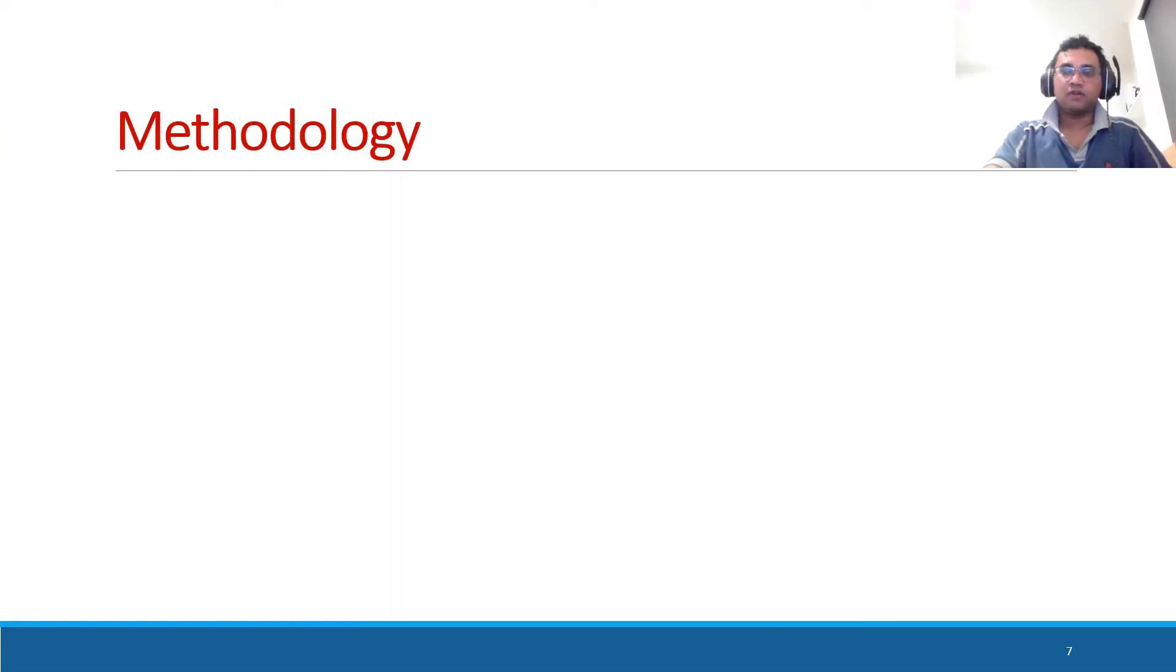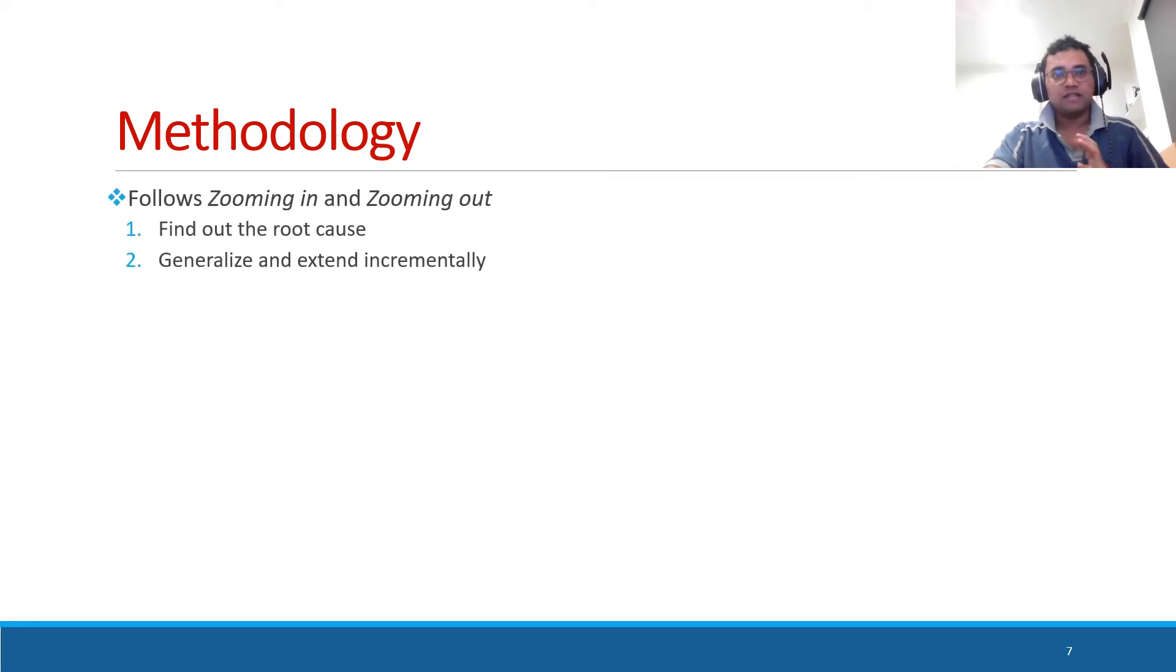Now I would like to present the methodology of Grammar2Fix. Basically, we follow a zooming in and zooming out approach. That means, first, we find out the root cause for the failure. Based on that, we develop a basic level grammar and we generalize it and also we extend it.